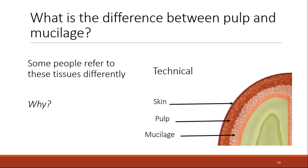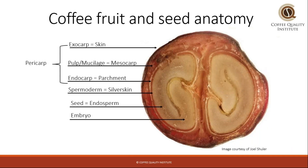If you look at this corner of a diagram of the coffee seed and fruit, you can see that we have the skin called out, the pulp called out, and the mucilage called out. And actually, this diagram looks like these tissues are quite different. Let's take this to the field.